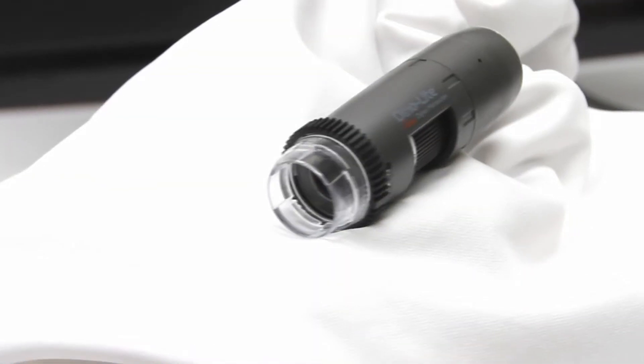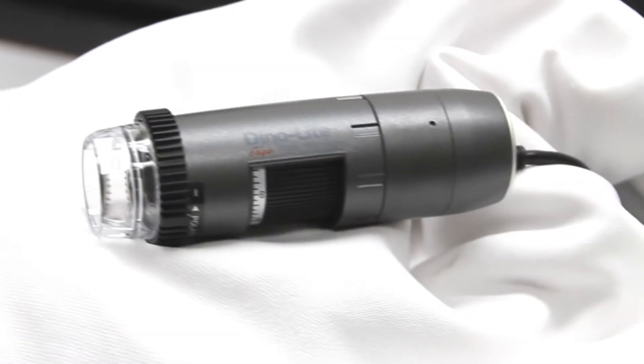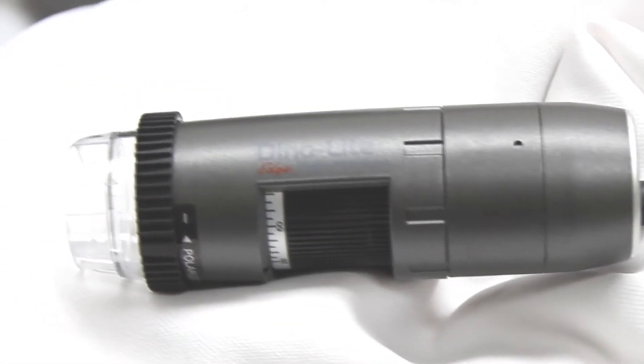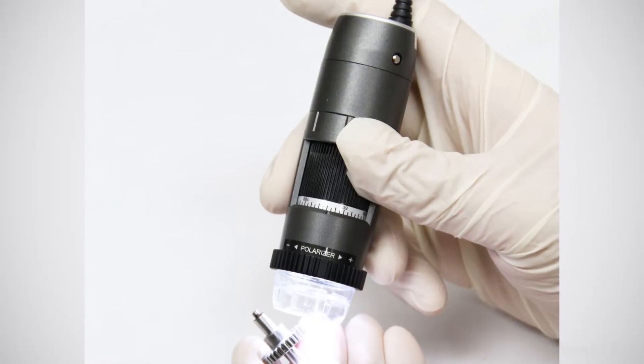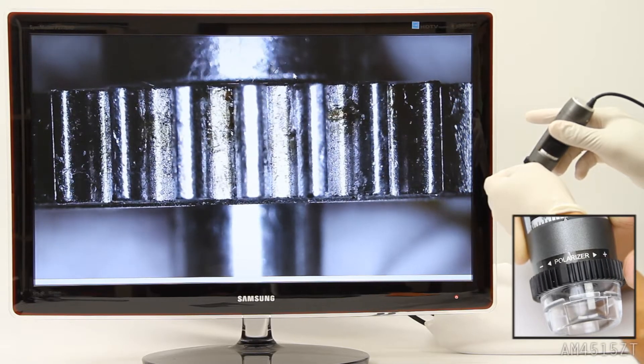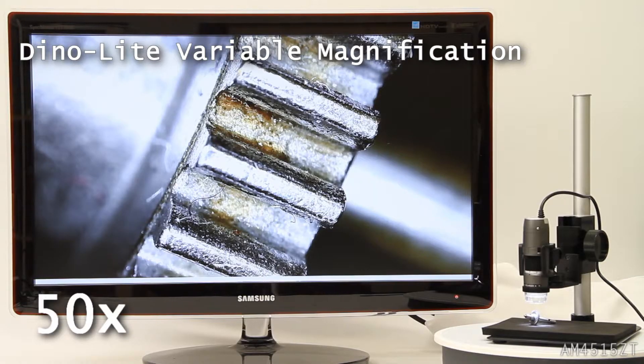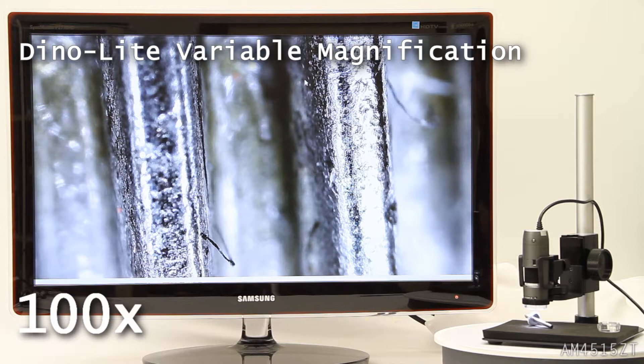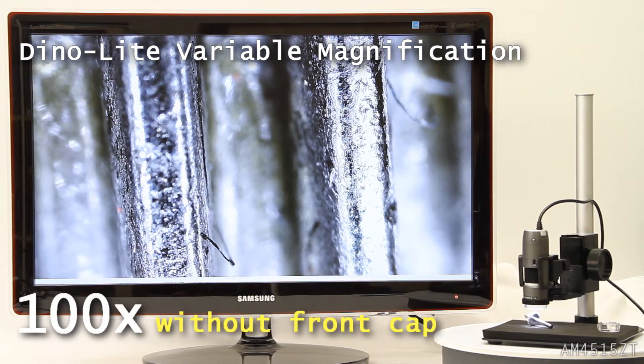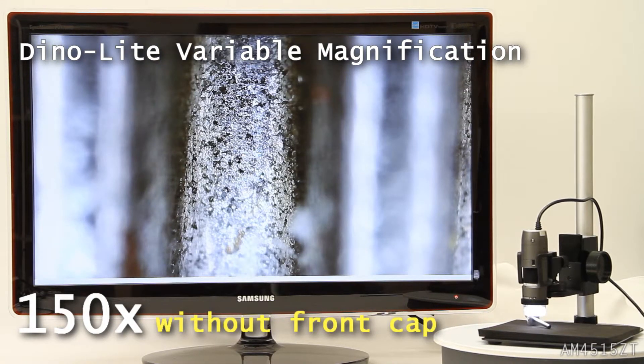Introducing the AM4515ZT Dynolite Edge handheld digital microscope with automatic magnification reading. This model has all of the features of the AM4115ZT including the polarizer, but also displays a live magnification reading in the DynoCapture 2.0 window.